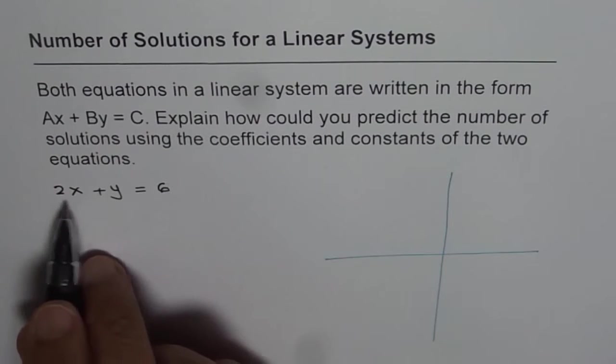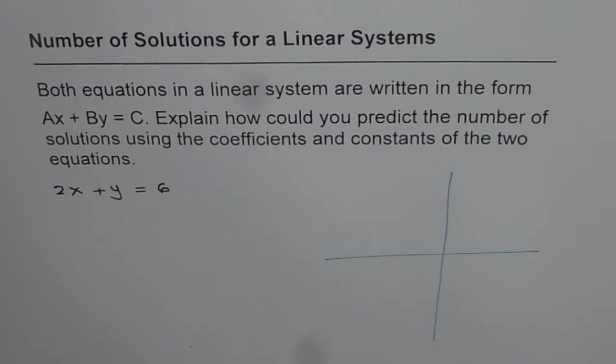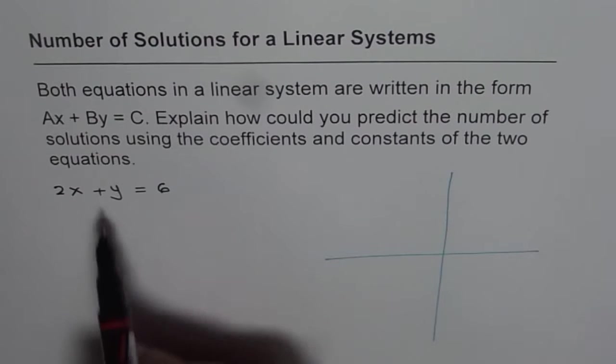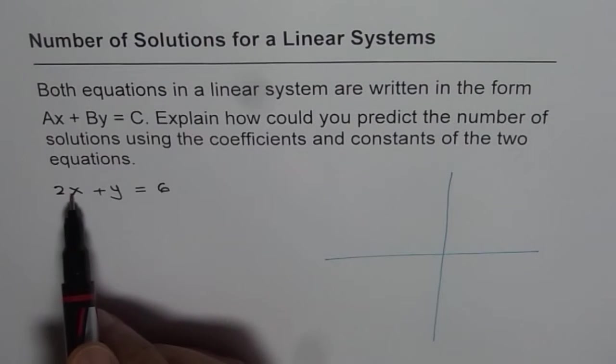Let us say we have 2X plus Y equals to, let us say 6. Now, to sketch this line, we can find X and Y intercepts. Y intercept is when X is 0.